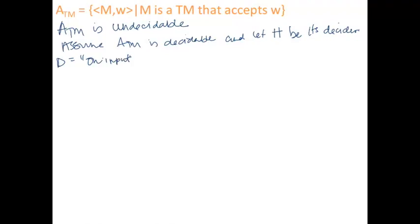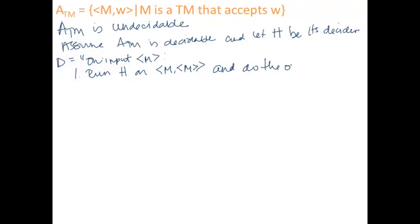D on input M, where M is a Turing machine, is going to run H, the decider for ATM, on the input M along with M — M is given as the machine description and M is given as the string. And D does the opposite of what H does. If H says yes — M accepts the string M — then D is going to reject M. If H says no — the machine M does not accept the string M — then D is going to accept M.